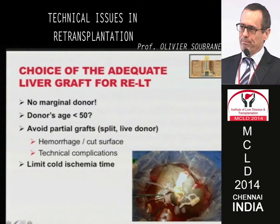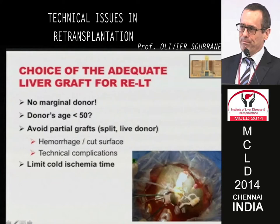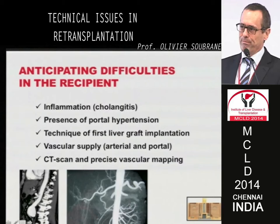A few points about the choice of the adequate liver graft for re-transplantation. I think it's better not to use marginal donors. The problem is that very nice liver grafts today are more and more rare, but re-transplantation is associated with so many technical difficulties that it's better not to use marginal donors. The donor age limit — I don't know; there is no limit in the literature, but maybe less than 50 years old would be ideal. It's better to avoid partial grafts such as split grafts or live donors, because of the risk of hemorrhage from the cut surface and technical complications with short and multiple vessels. It's always better to limit cold ischemia time in these circumstances.